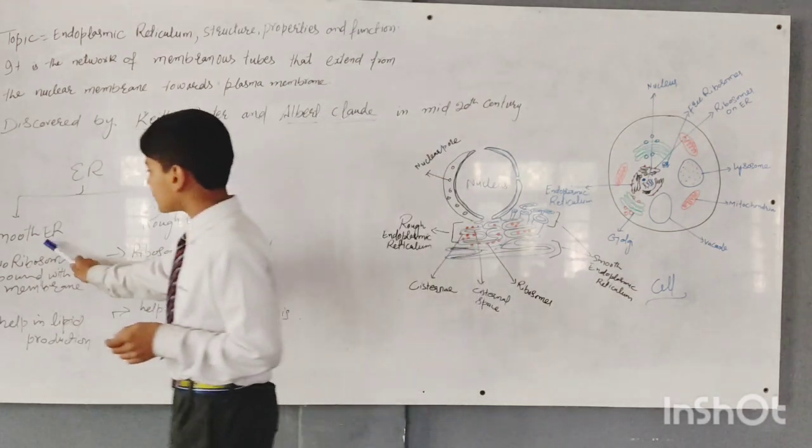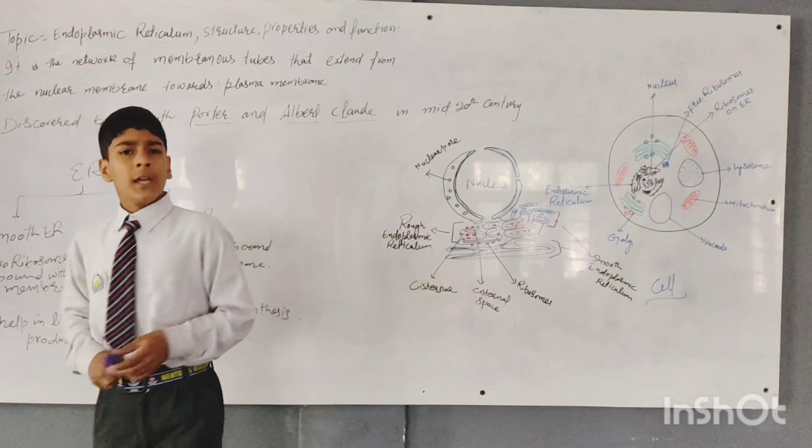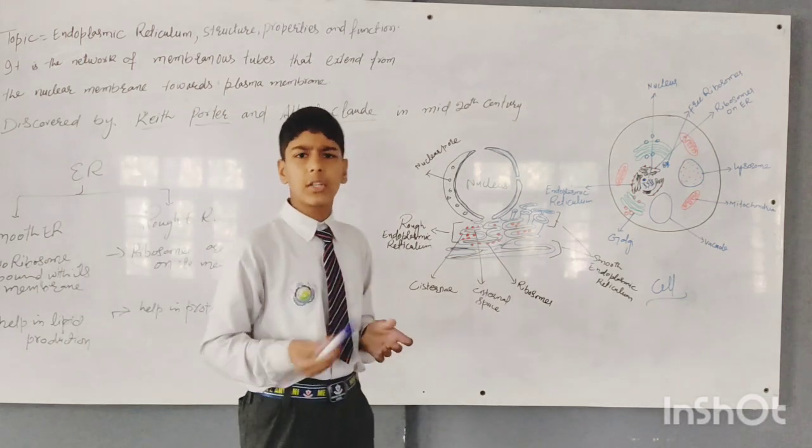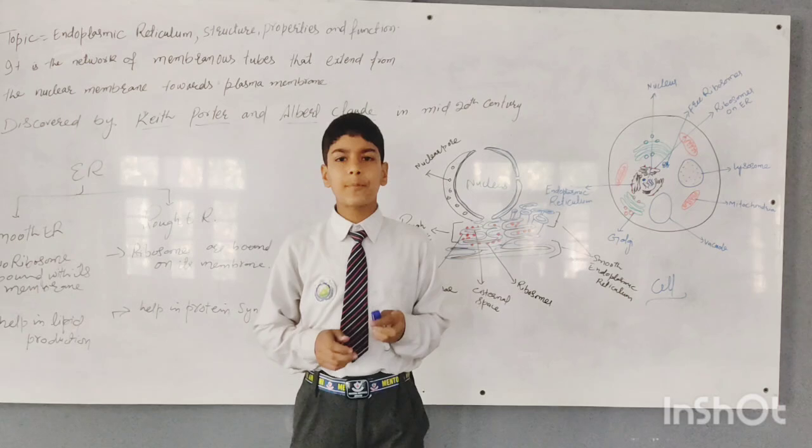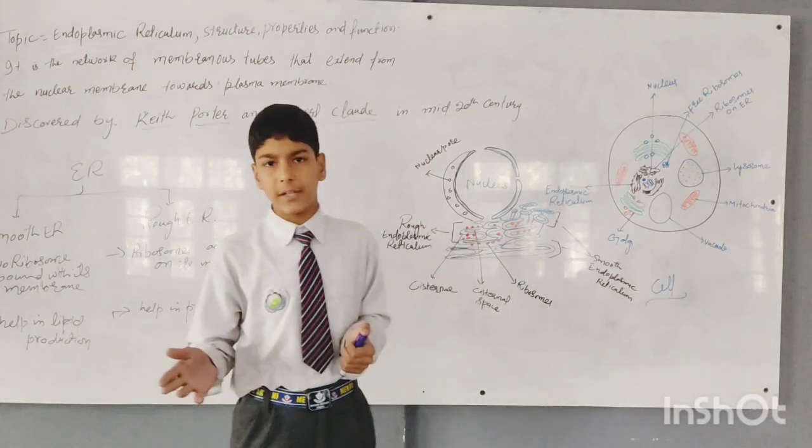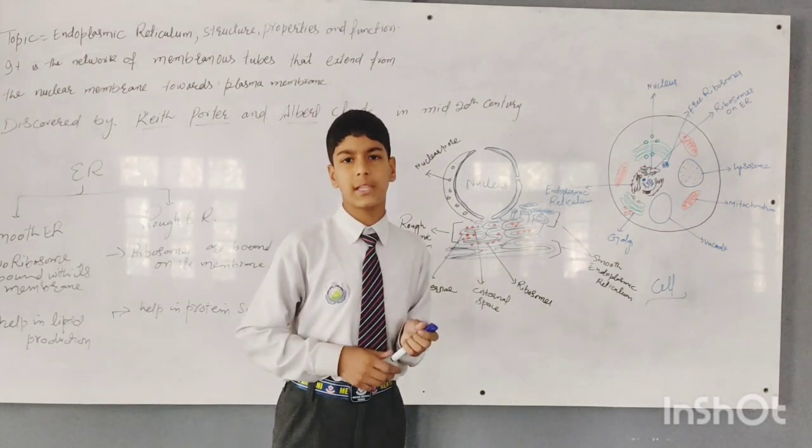Now I will tell you about the smooth endoplasmic reticulum. It is smooth on the outside and has nothing to do with ribosomes. It helps in producing the lipids. Thank you.